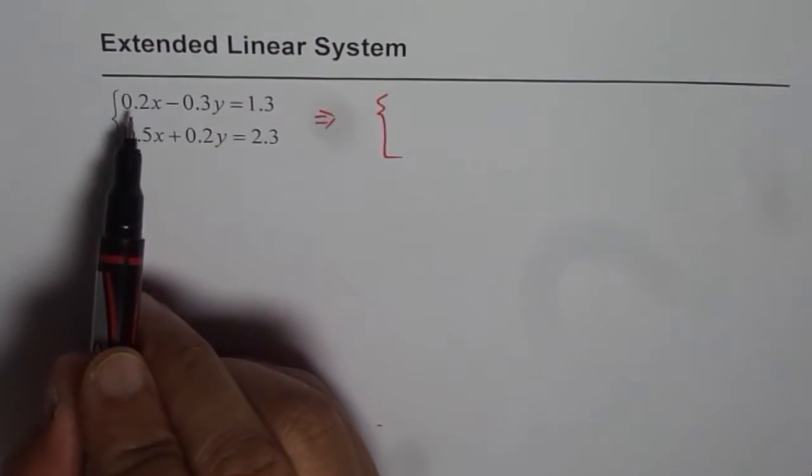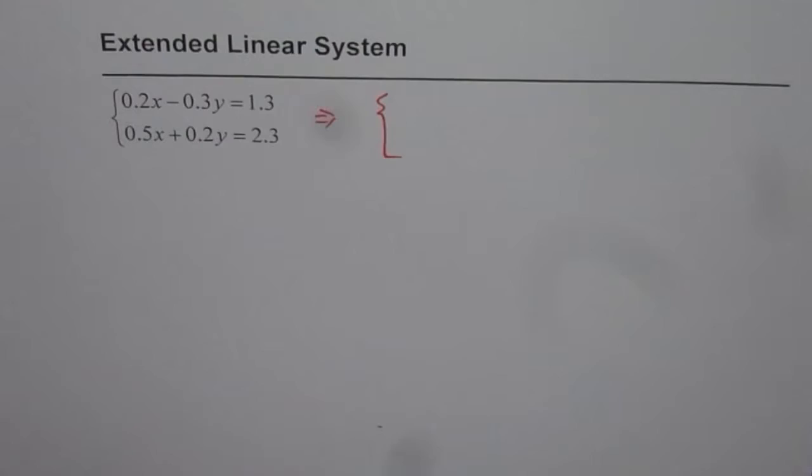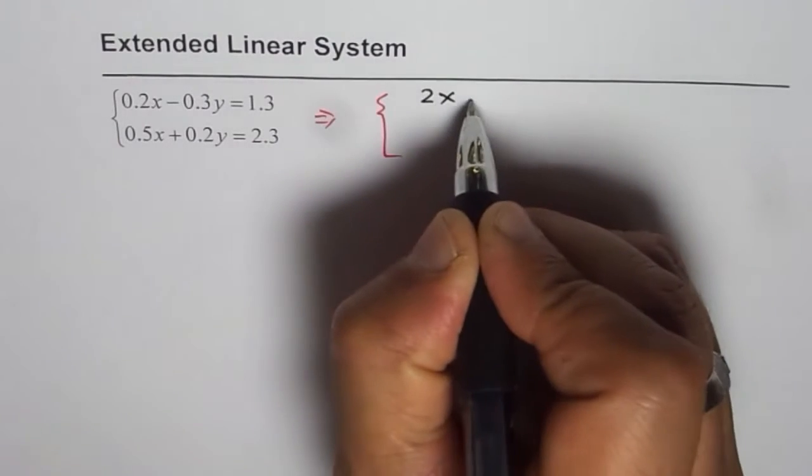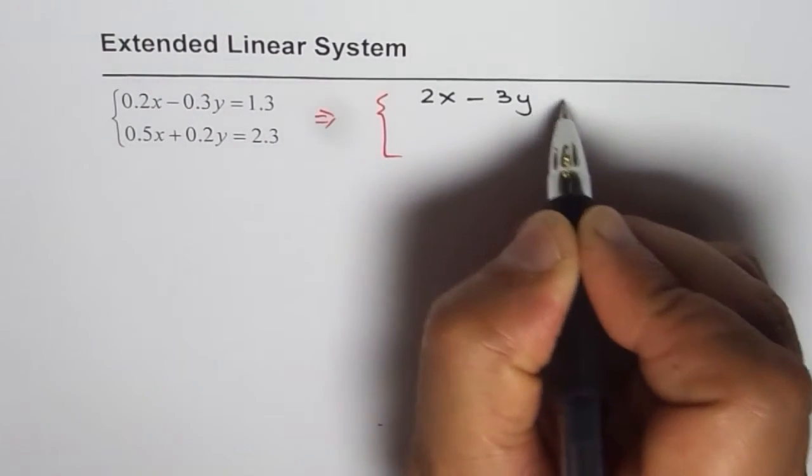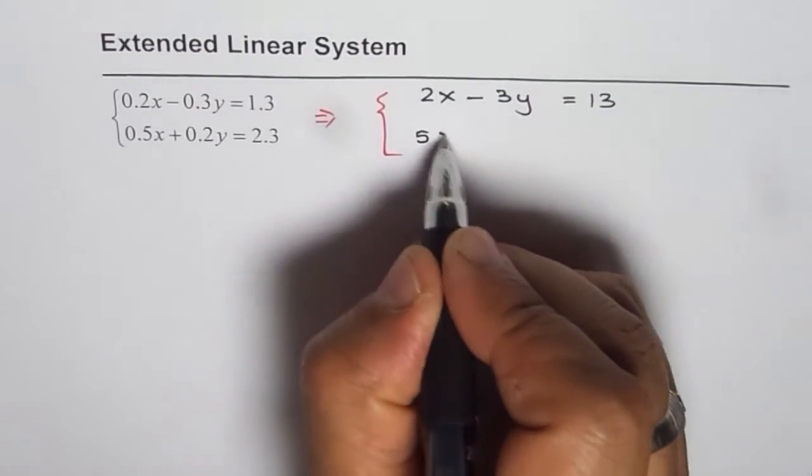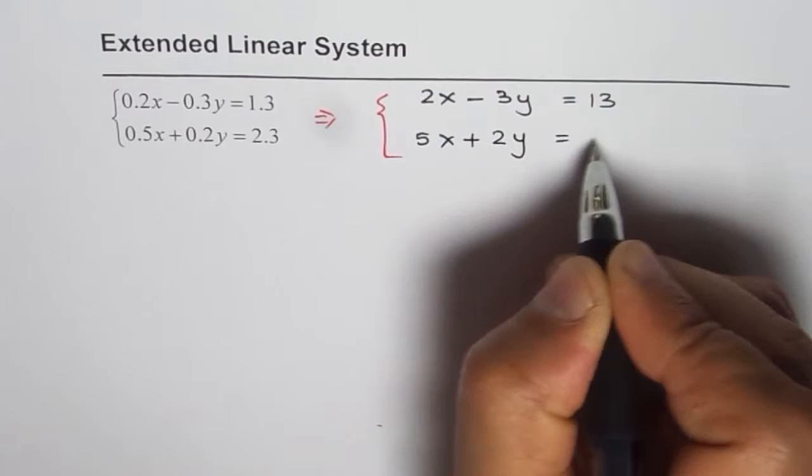So what we will do is we will times everything here by 10. So if we do that then the question transforms and we could write this as 2x minus 3y equals to 13 and the second one becomes 5x plus 2y equals to 23.